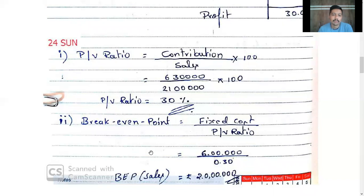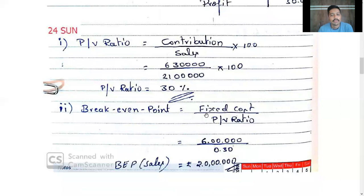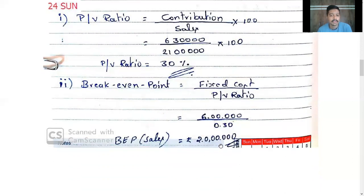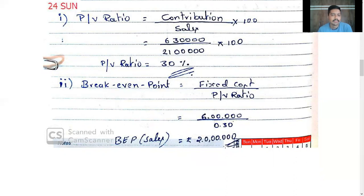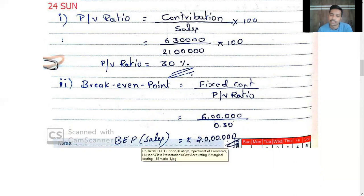Next — break-even point. We solve for break-even sales. Formula: fixed cost divided by PV ratio. Fixed cost is Rs. 6,00,000 divided by 0.30 PV ratio. So BEP sales equals Rs. 20,00,000. That is the break-even point — the sales amount.